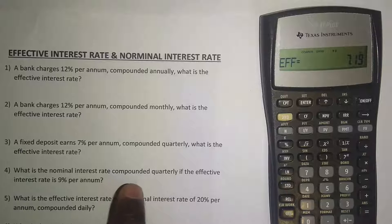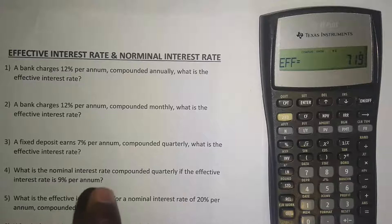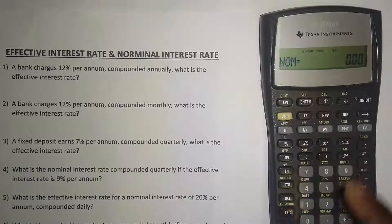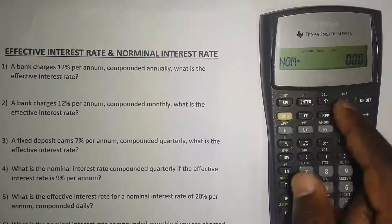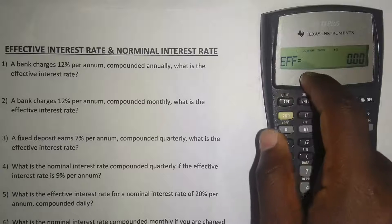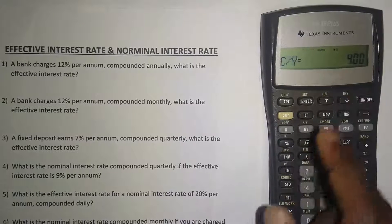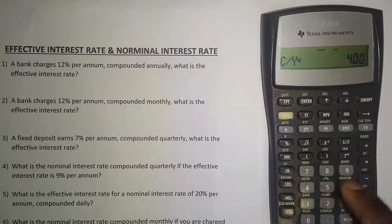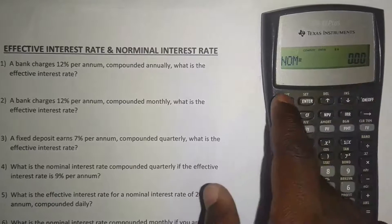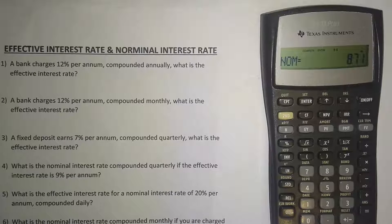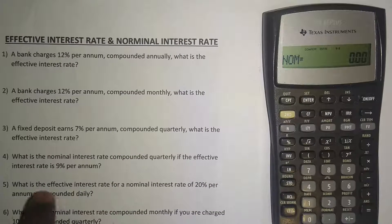Example 4 asks: what is the nominal interest rate compounded quarterly if the effective interest rate is 9 percent per annum? Now we're moving from effective to nominal. Clear your work, then press the downward arrow to get to effective and enter 9, press Enter. Press the downward arrow again and enter 4 for quarterly compounding, press Enter. Press the downward arrow again and compute the nominal interest rate — the result is 8.71 percent.